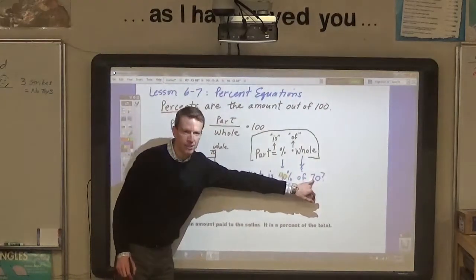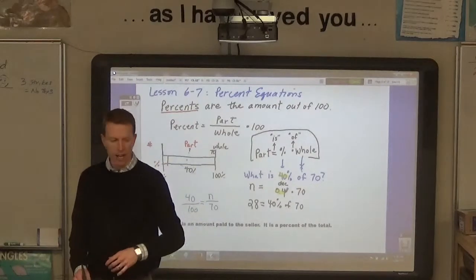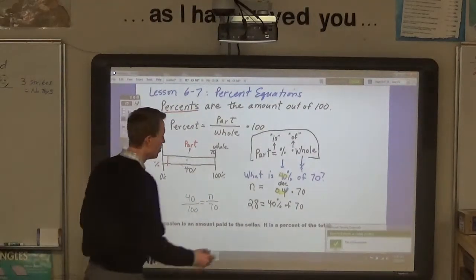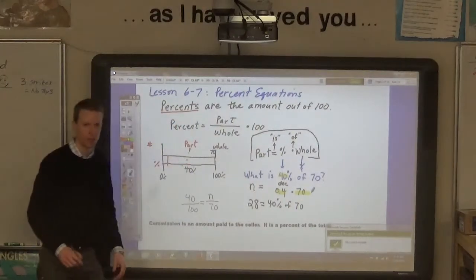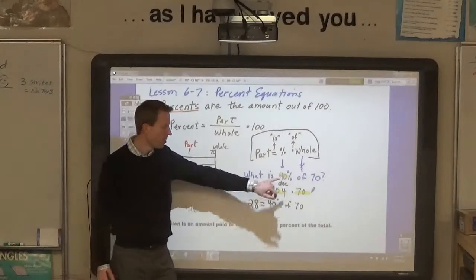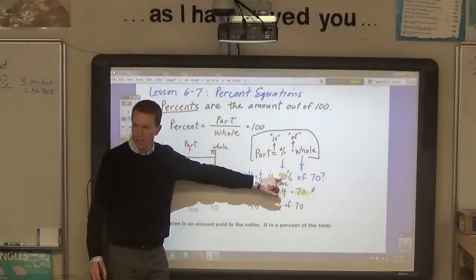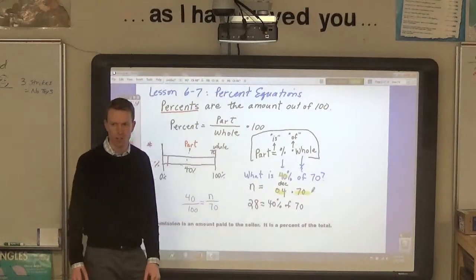And since 70 is already a number, it's already a whole, you can just multiply it by 0.4. You don't have to convert this number because it's not a percentage. Percents always have to be converted to a decimal in order to multiply them.